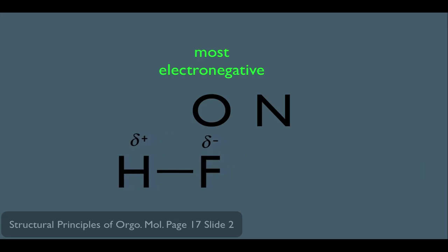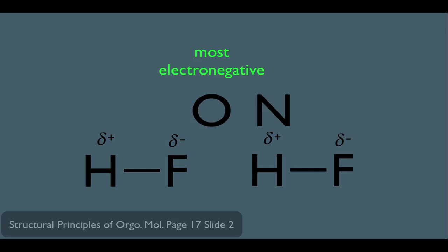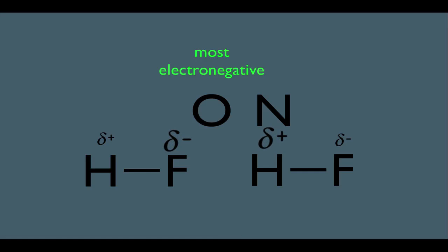Let's think about the attraction of two H-F molecules next to each other. Because F is extremely electronegative and H is not very electronegative at all, the partially negative on the F and the partially positive on the H would be very strong. The attraction between these two molecules would therefore be very strong. From general chemistry, this intermolecular force is called dipole-dipole interaction — more specifically, hydrogen bonding, which makes up the strongest dipole-dipole type interactions.